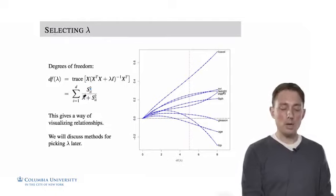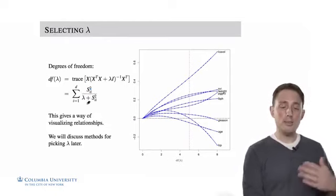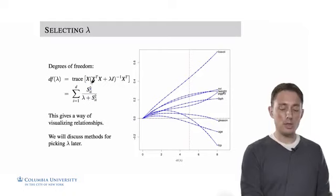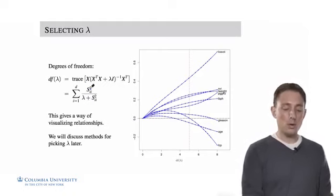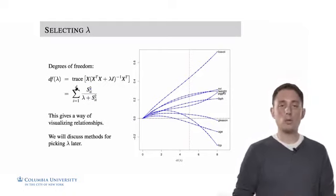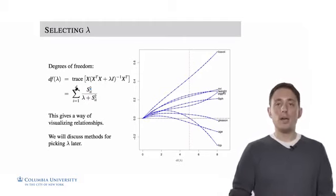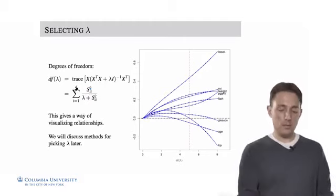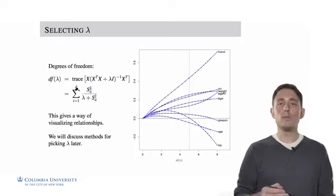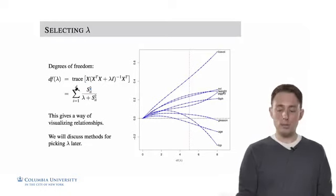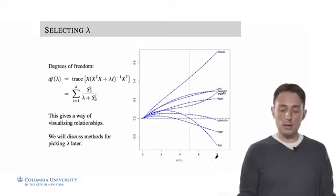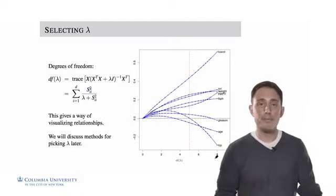And then as lambda goes to zero, in the limit, each term is equal to one. So the sum from i equals one to D of one is equal to D. In the other extreme, as lambda goes to zero, the number of degrees of freedom is equal to D, which is the dimensionality of the problem.